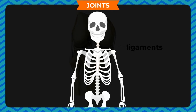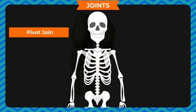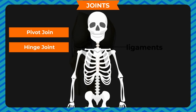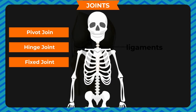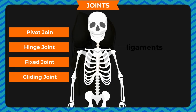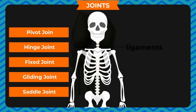There are various types of joints in our body: ball and socket joint, pivot joint, hinge joint, fixed joint, gliding joint, and saddle joint. Bones are rigid structures and we cannot imagine any kind of movement in the body without joints and muscles.